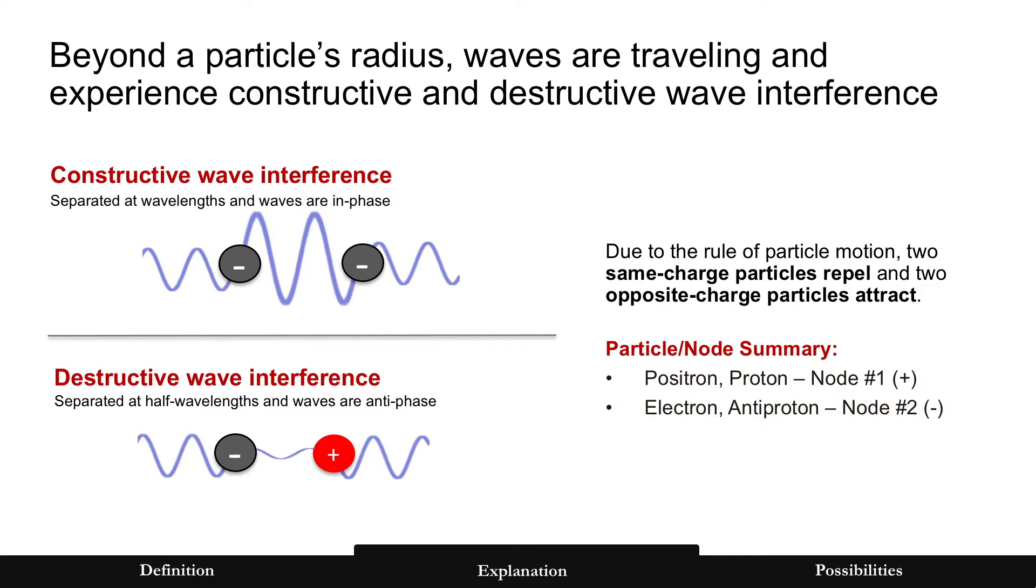Here you have just a quick summary of the potential nodes. There's only two of them. So a proton and positron are on the same node, and an electron and an antiproton are on the opposite node.